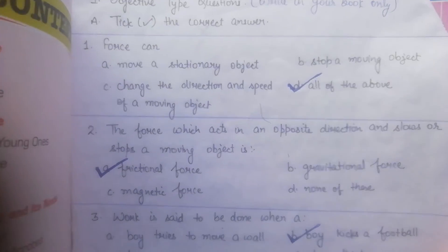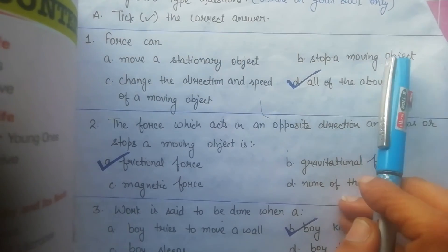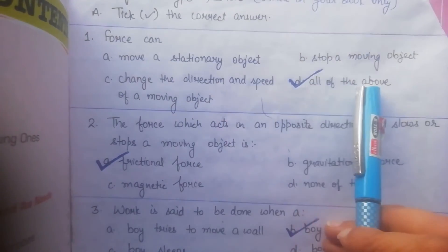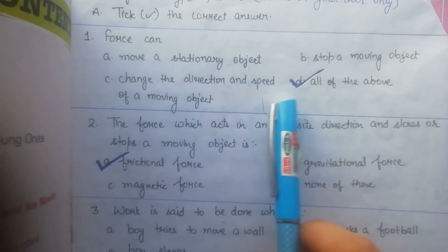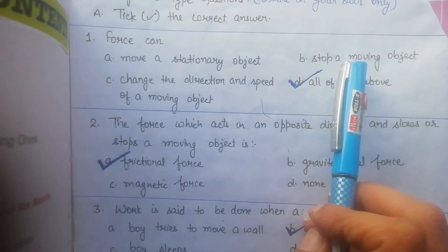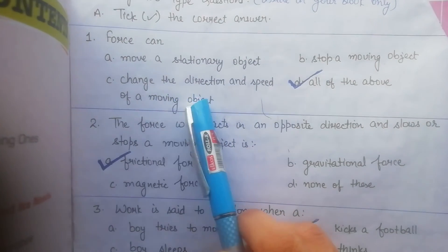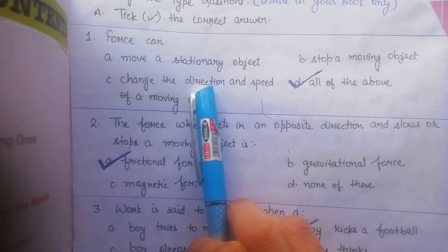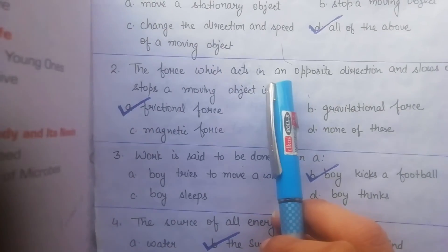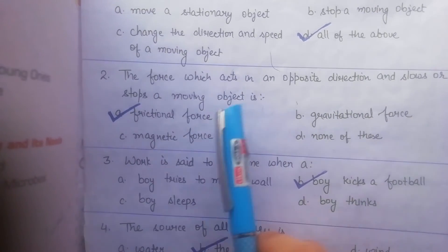Objective type questions, take the correct answer. Force can move a stationary object, stop a moving object, change the direction and speed of a moving object, and all of the above. Force can move a stationary object, which can change the speed and direction. So this answer is all of the above. The force which acts in an opposite direction and slows or stops a moving object is frictional force.